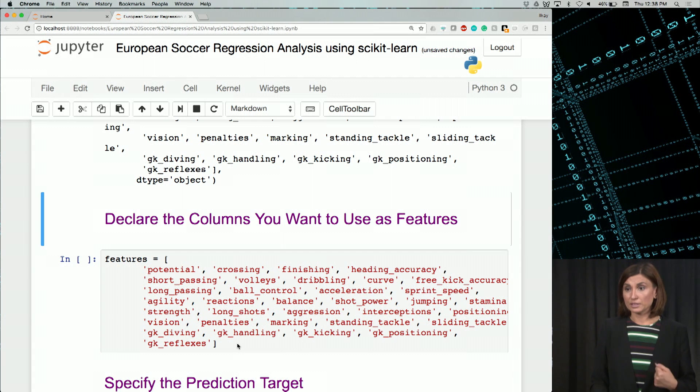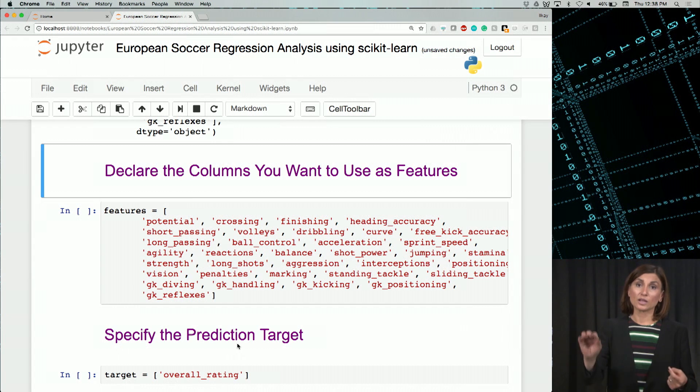Except here, we won't see the overall rating because that's our prediction target. Based on the input data from these features by selecting them, we will predict the numeric overall rating value of a player.